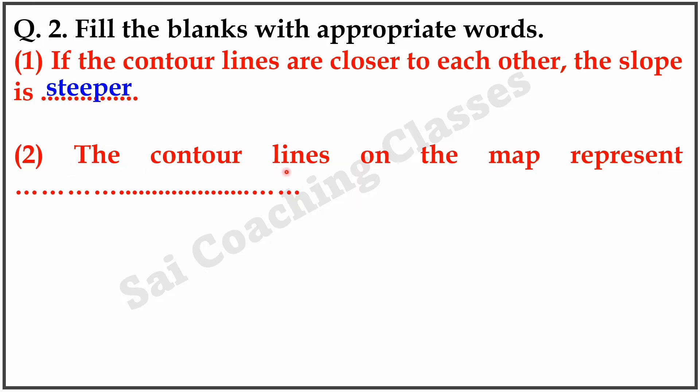Question 2. The contour lines on the map represent... Answer: places of same altitude.